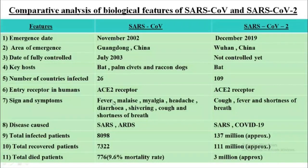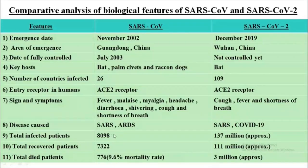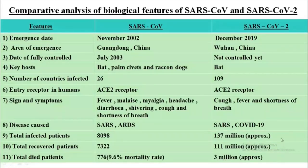Signs and symptoms of SARS-CoV include fever, malaise, myalgia, headache, diarrhea, shivering, cough, and shortness of breath. For SARS-CoV-2: cough, fever, shortness of breath, and many more symptoms. Disease caused: SARS-CoV causes SARS or Acute Respiratory Distress Syndrome (ARDS); SARS-CoV-2 causes SARS or COVID-19. Total infected patients: 8,098 for SARS-CoV and 137 million for SARS-CoV-2. Total recovered: 7,322 for SARS-CoV and 111 million for SARS-CoV-2. Total deaths: 776 for SARS-CoV and approximately 3 million for SARS-CoV-2 — these figures are approximate and currently higher.